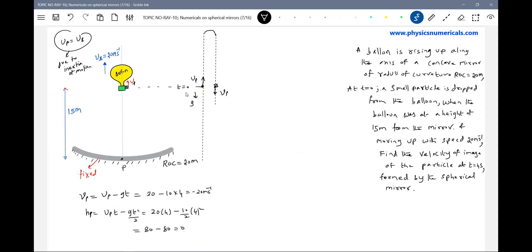Our problem has become very simple now. What is the speed of the particle? 20 meter per second. Now he's asking to get the velocity of image. So what is the formula for velocity of image? V I should be equal to minus of magnification square into V. Velocity of object is velocity of particle.